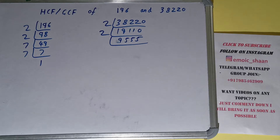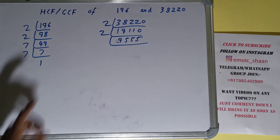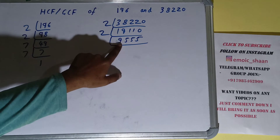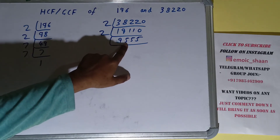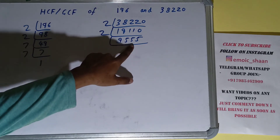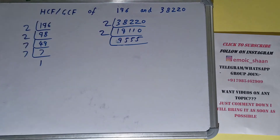Now is 9555 divisible by 2? No, clearly not — it is an odd number. So we'll check with the next lowest prime number, which is 3. Is it divisible by 3? We need to check. The digit sum is 9+5+5+5 = 24. Yes, it is divisible by 3, so we'll divide.